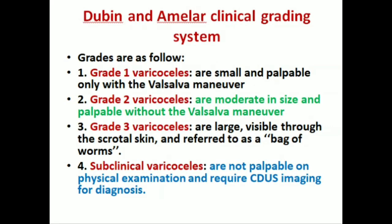Varicocele grading: using the Dubin and Amelar clinical grading system, grades are as follows. Grade 1 varicocele is small and impalpable, only detectable with the Valsalva maneuver. Grade 2 varicocele is moderate in size and palpable without the Valsalva maneuver. Grade 3 varicocele is large, visible through the scrotal skin, and referred to as a 'bag of worms.' Another type is subclinical varicocele — not palpable on physical examination and requires color Doppler ultrasound imaging for diagnosis.